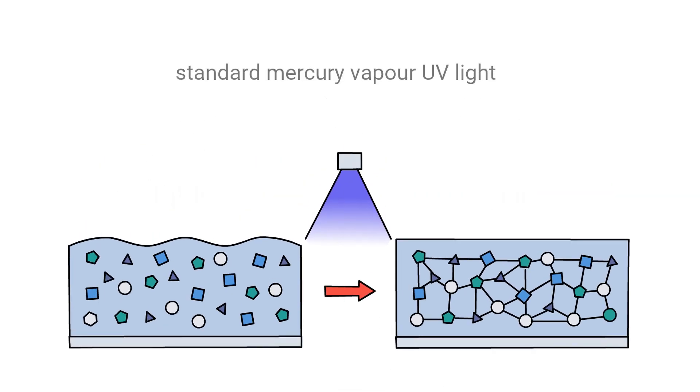Curing, using standard mercury vapour UV light, is much more energy efficient than conventional inks, and now, with the development of LED UV lamps, it got even better.